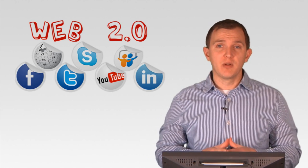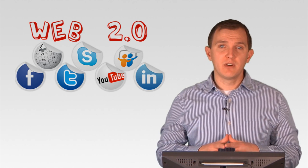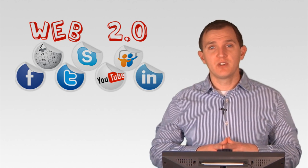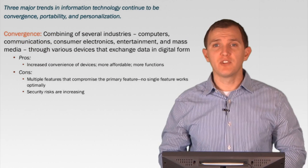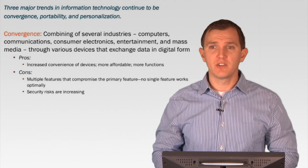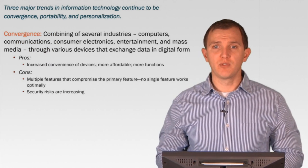So now we're uploading all of our status updates and our tweets — here's where we are, here's what we're doing, here's our photos, and so on. Three trends in information technology continue to be: convergence, which we've definitely touched on at this point, and portability and personalization, which should be somewhat obvious, but we'll go through them anyway.